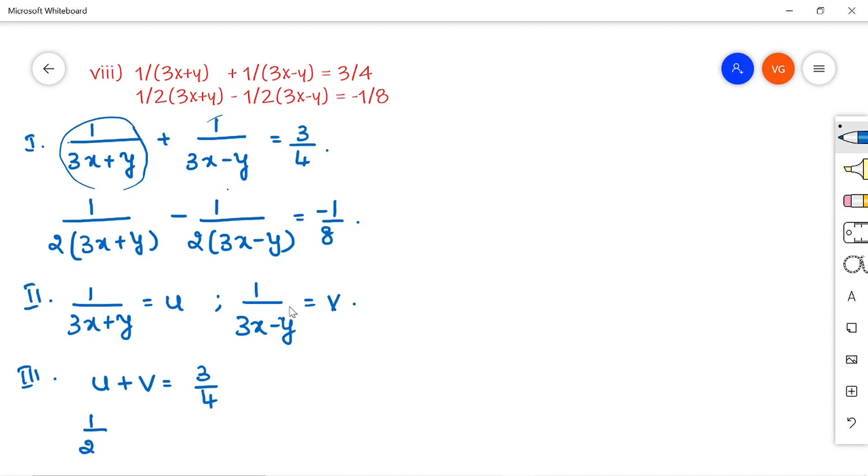The second equation is 1 by 2u minus 1 by 2v is equal to minus 1 by 8. Now, this you can also simplify. You can cut it off. Now, the set of equations will become u plus v is equal to 3 by 4 and u minus v is equal to minus 1 by 4.